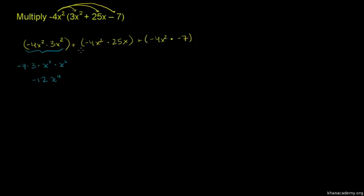For the second term, negative 4 multiplied by 25 gives negative 100, and x squared multiplied by x gives us x to the power 3. Adding exponents 2 plus 1 equals 3, so we have negative 100x to the power 3.